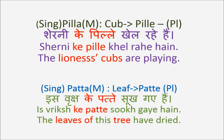Then Patta — Patta is leaf, Patte is leaves, plural. Again, Patta is masculine, so it turns to Ke from Ka. Is Vriksh Ke Patte Sookh Gaye Hai — the leaves of this tree have dried. Vriksh is tree, Sookhna means to dry. So Patta becomes Patte, and Ka becomes Ke: Vriksh Ke Patte, Sherni Ke Pillai.